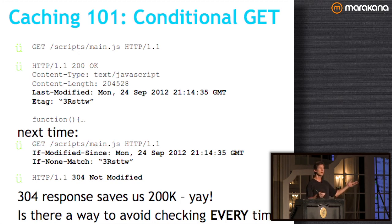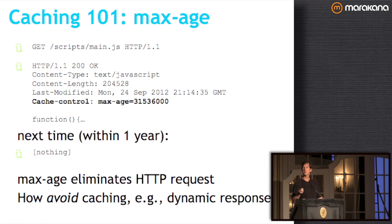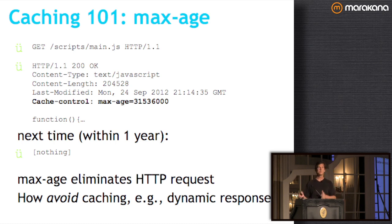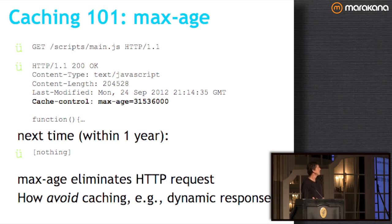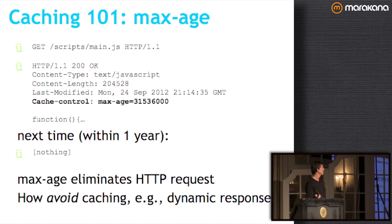So how do you avoid the conditional GET every time? That's where caching headers come in — specifically Cache-Control max-age, which tells the browser the maximum number of seconds it can reuse a response without even checking. If max-age is set to one year of seconds, within that year the browser reads the file directly from cache — no HTTP traffic at all, just reads from disk. That's extremely fast and eliminates the HTTP round trip entirely.